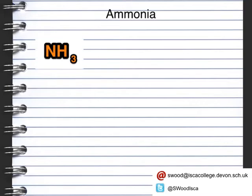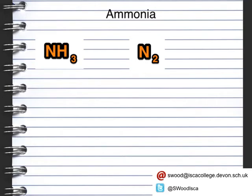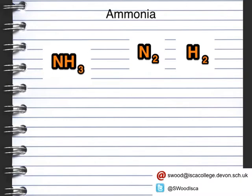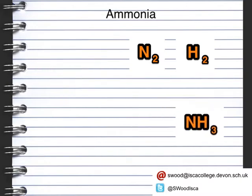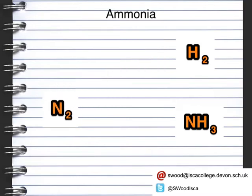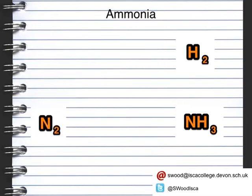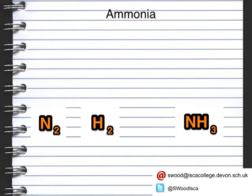So, what is ammonia? Ammonia is a gas at room temperature that has the formula NH3. Ammonia is made from two things — it's made from nitrogen and from hydrogen. This is an example of what we call a reversible reaction. The nitrogen reacts with the hydrogen to form the ammonia.